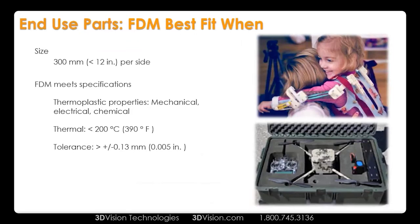FDM is also a best fit when the size is basically within our build envelope — about one cubic foot or less. The FDM materials need to meet the specifications of our end-use parts, whether that's mechanical, electrical, or chemical. For thermal, we like to be below 390 degrees Fahrenheit, and the generally acceptable tolerance is plus or minus 5,000. That plus or minus 5,000 is material-to-material and machine-to-machine, so we can hit tighter — ABS, for example, is more dimensionally stable than Ultem.